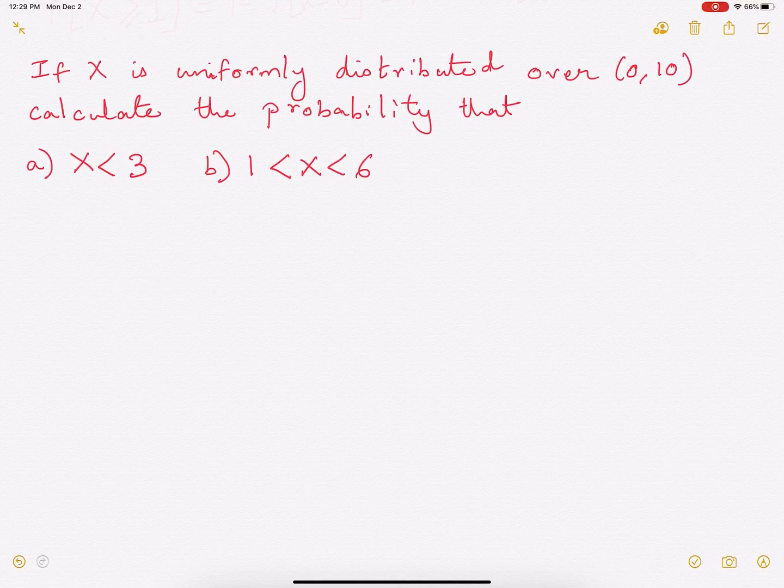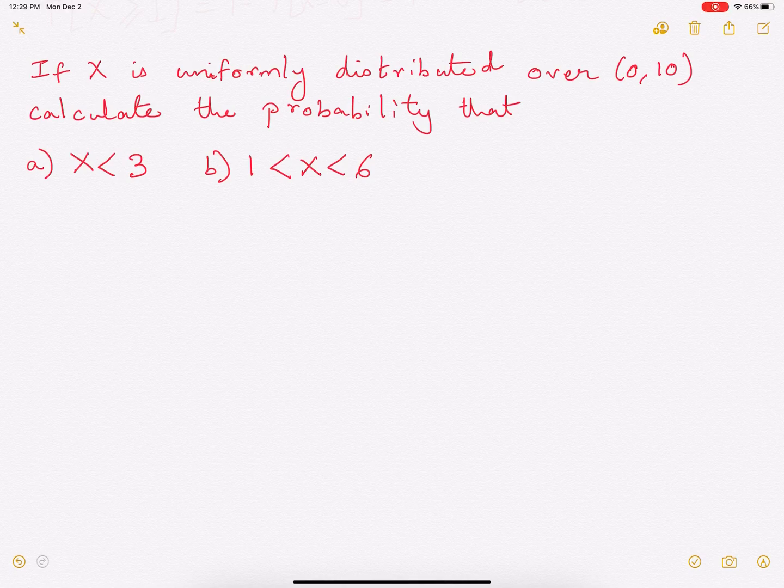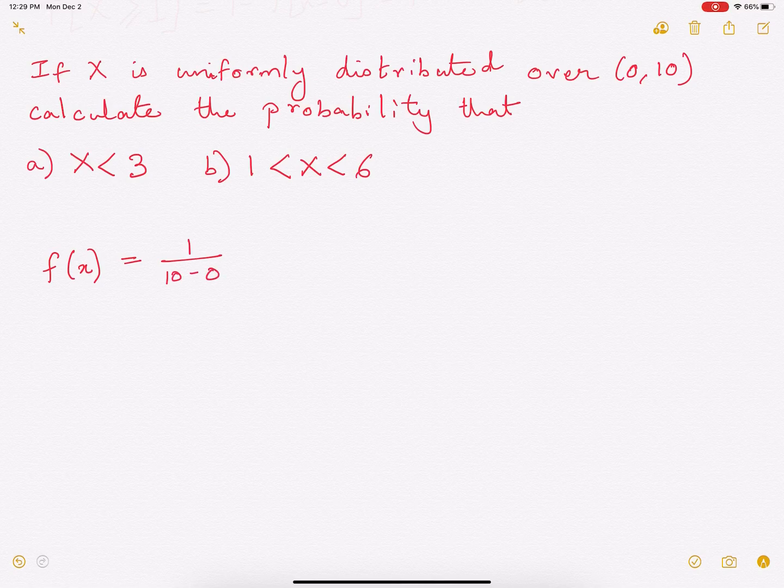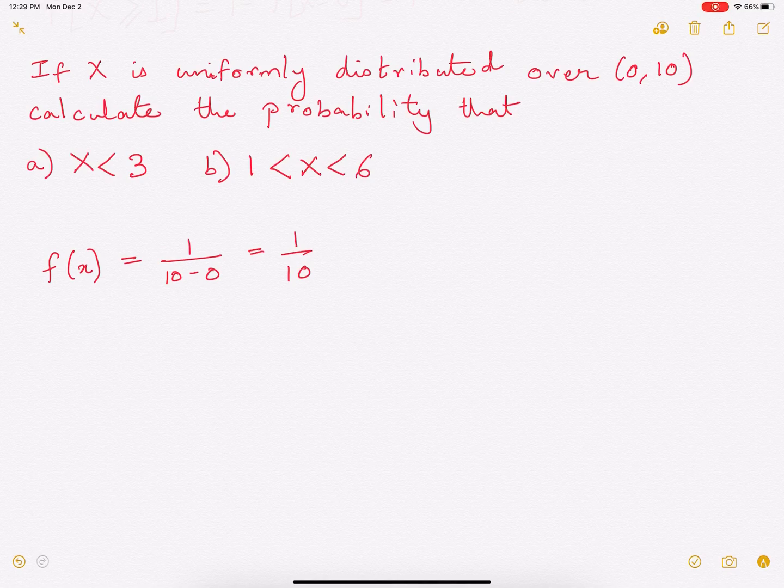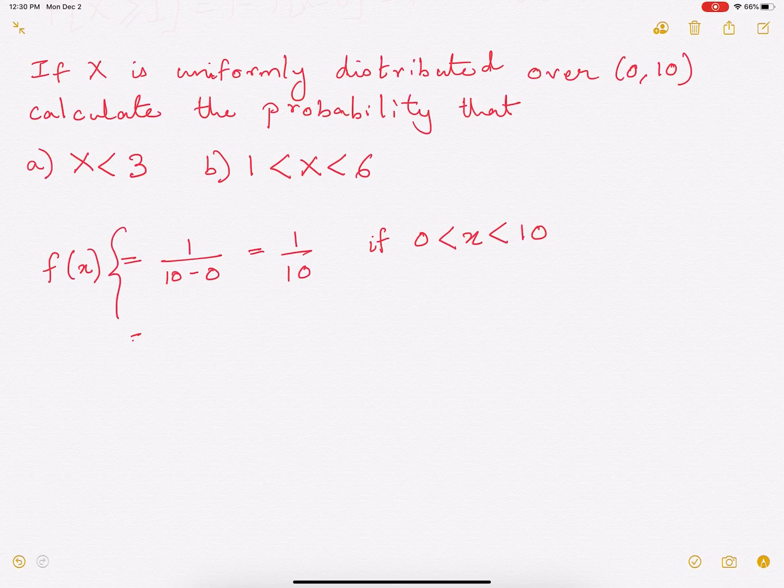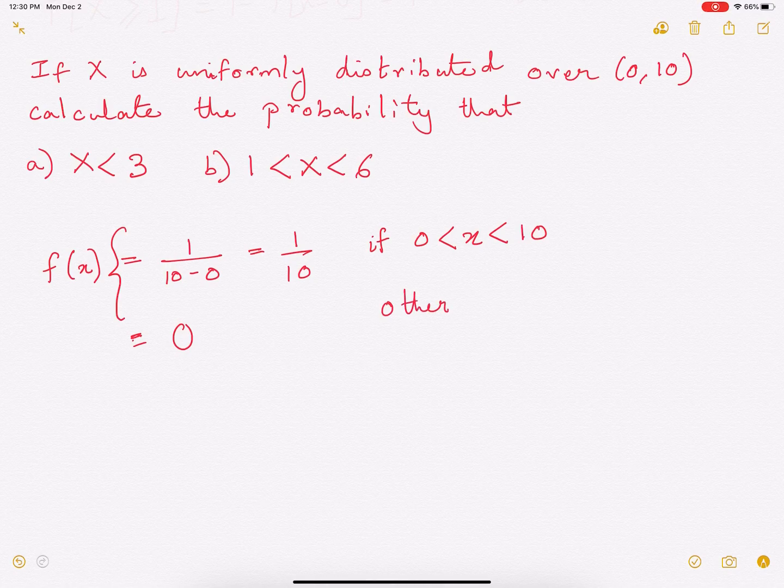Now x is uniformly distributed between 0 and 10. Therefore, the probability density function of x, fx, is given by 1 by 10 minus 0 which is going to be 1 over 10 for x lying between 0 and 10 and it's going to be 0 otherwise. So this is the PDF of x.